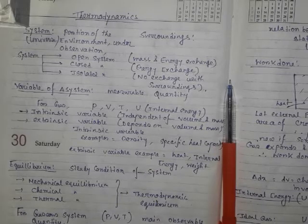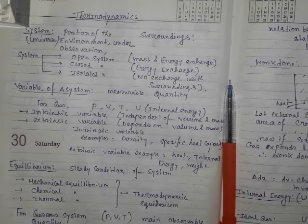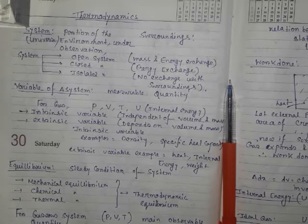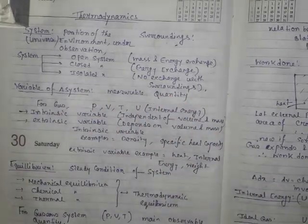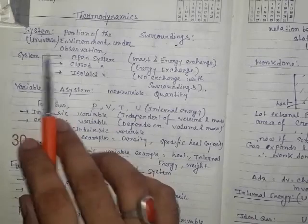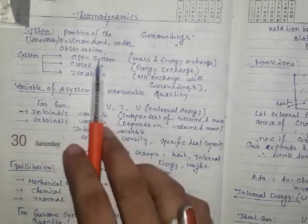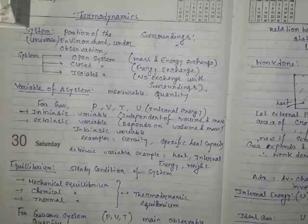Surroundings is everything inside the universe except the system. So system and surroundings are two basic concepts of thermodynamics. There are mainly three types of system. One is open system, another one is closed system, and another one is isolated system. This classification is based on energy and mass exchange.